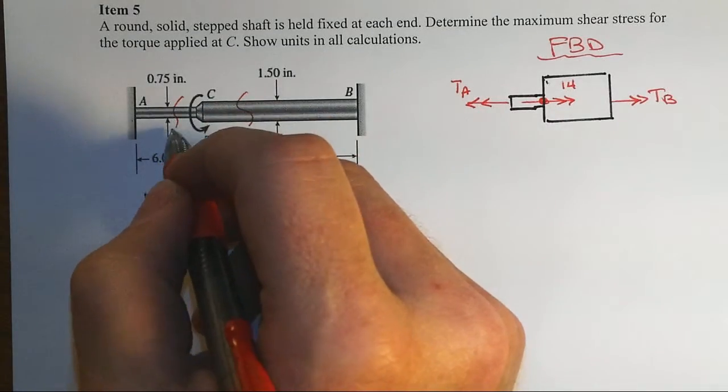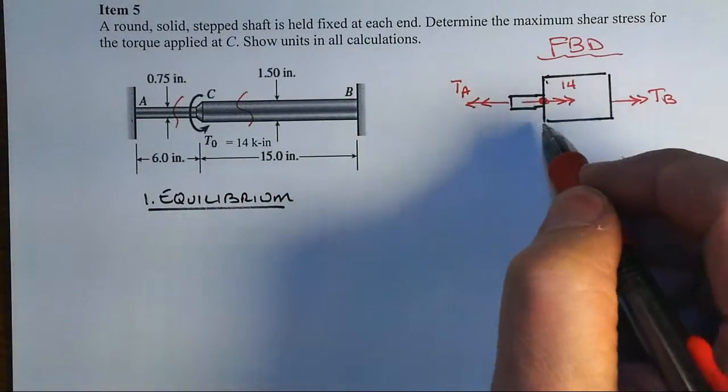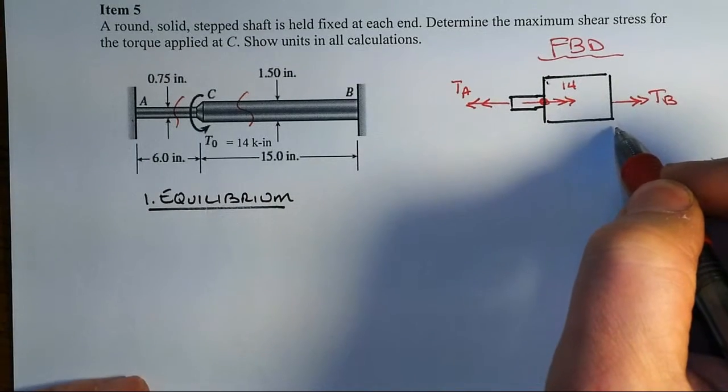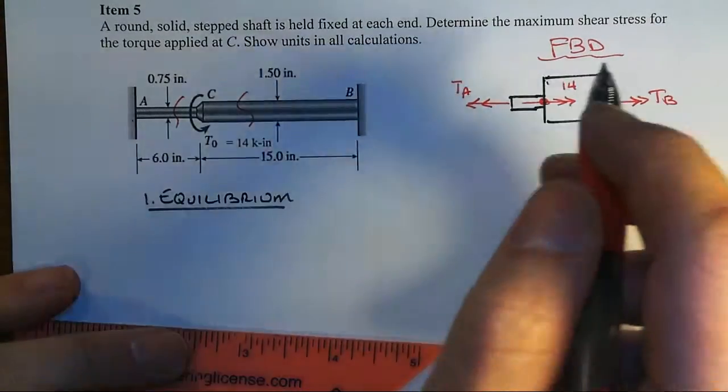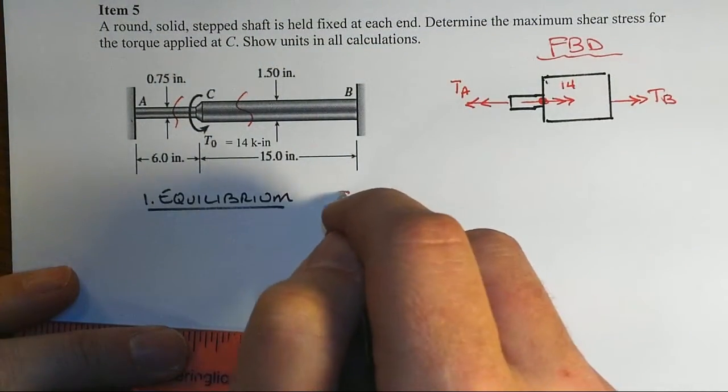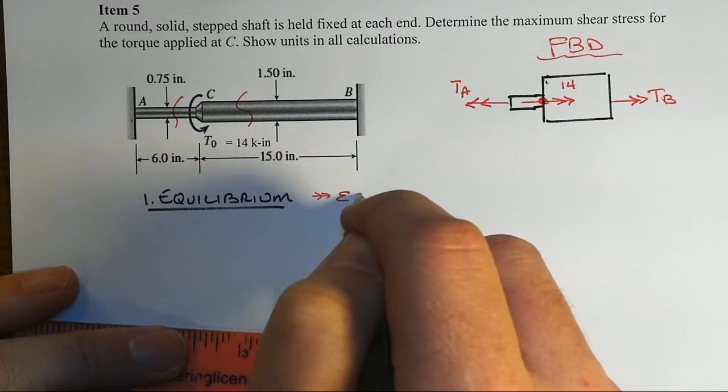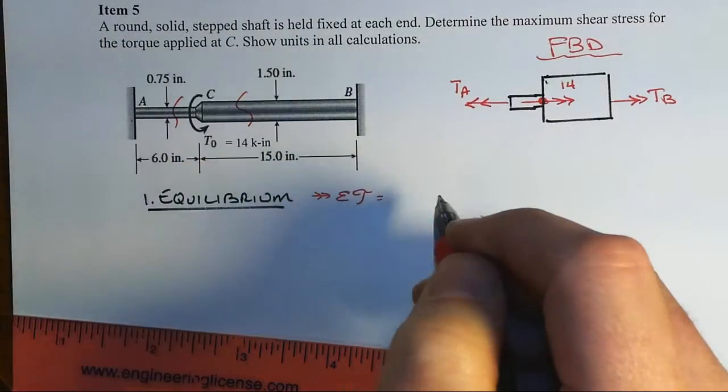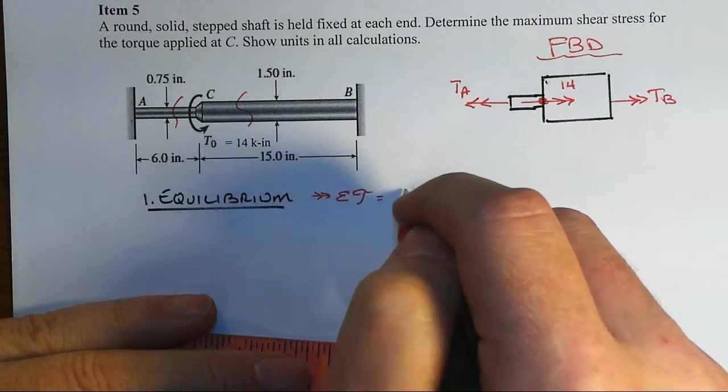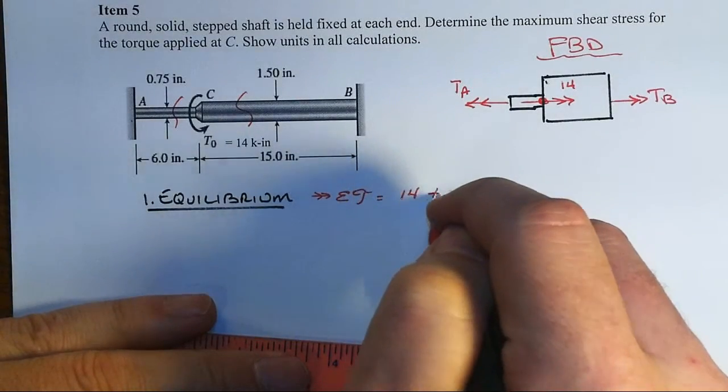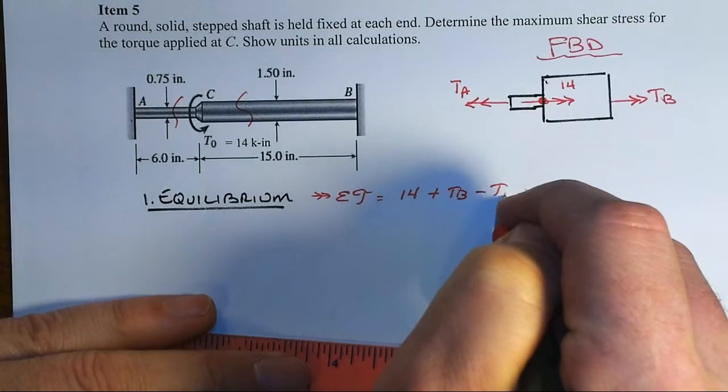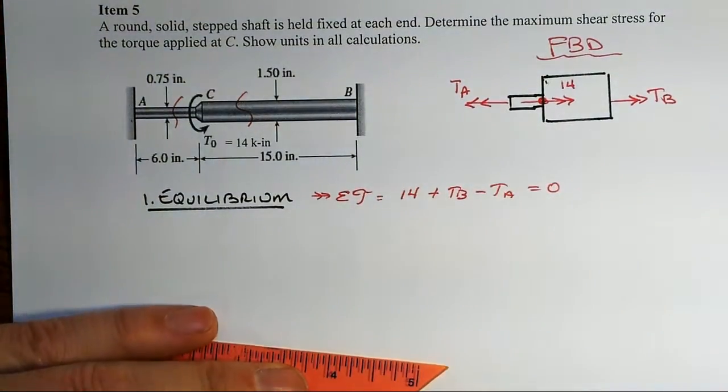A free body diagram to the left and to the right of point C gives us what you see over here to the right. And so applying equilibrium, we'll take to the right positive. We need to have 14 plus TB minus TA equal to zero.